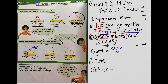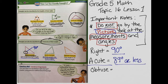A right triangle has one right angle. An acute triangle has all three angles as acute angles. What is the measurement for acute? It is 89 degrees or less. So the angles in an acute triangle are each going to be 89 degrees or less.